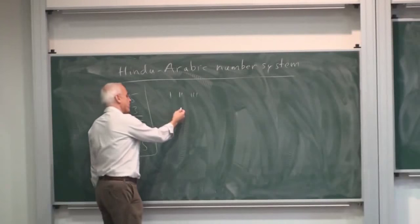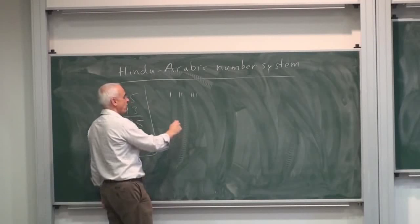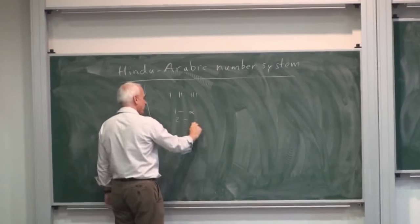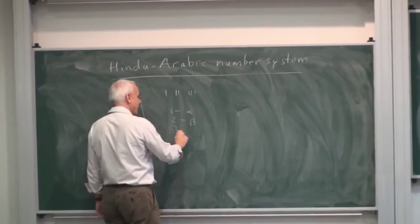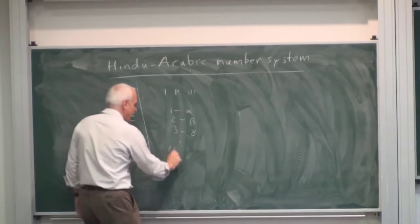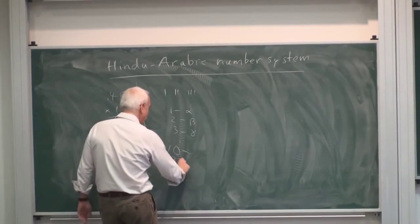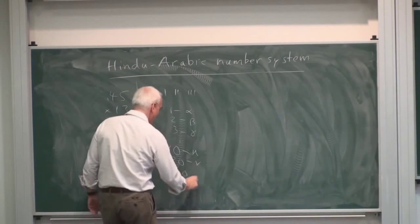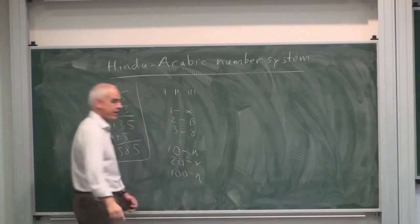The Greeks had different systems also, but they ended up assigning Greek letters representing different numbers, including numbers for 10 and 20 and 100. There would be various Greek letters, not these ones, but some ones.